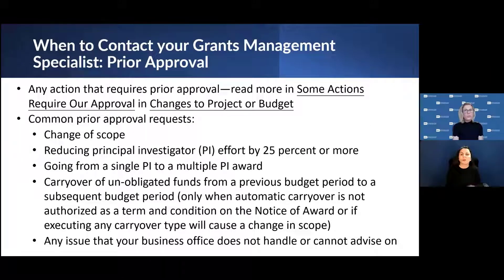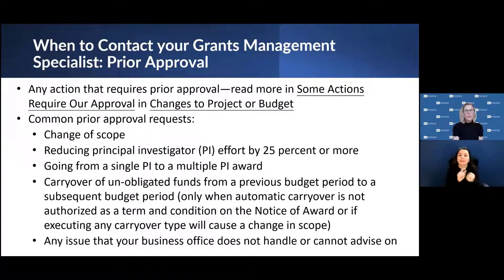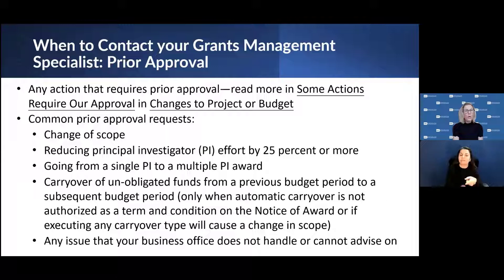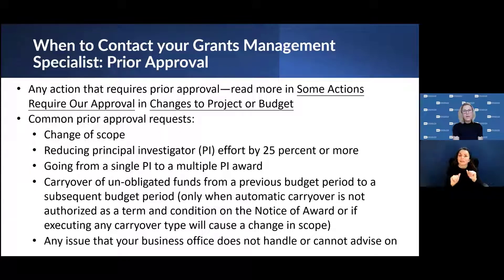You'll want to contact us for any action that requires prior approval. Some common prior approvals include a change in scope, reducing principal investigator effort by 25% or more, going from a single PI to a multi-PI, carryover of unobligated funds from a previous budget period to a subsequent budget period — and only when your automatic carryover is not authorized as a term and condition on the notice of award, or if executing any carryover would cause a change in scope. Also contact us with any issues your business office cannot advise on.